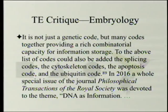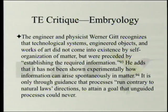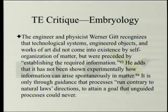It is not just a genetic code, but many codes together providing a rich combinatorial capacity for information storage — including the splicing code, cytoskeletal code, apoptosis code, and ubiquitin code. In 2016, a whole special issue of the journal Philosophical Transactions of the Royal Society was devoted to the theme 'DNA as Information.' Engineer and physicist Werner Gitt recognizes that technological systems, engineered objects, and works of art did not come into existence by self-organization of matter, but were preceded by establishing the required information. He adds that it has not been shown experimentally how information can arise spontaneously in matter — it is only through guidance that processes can attain a goal that unguided processes could never.